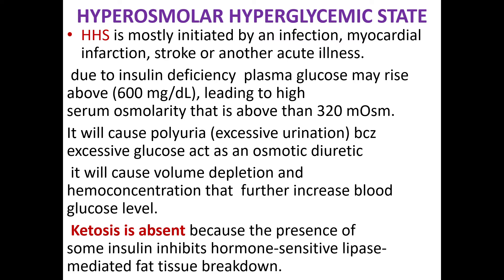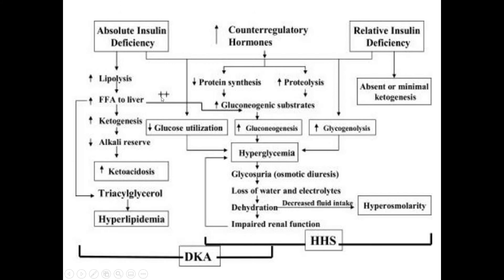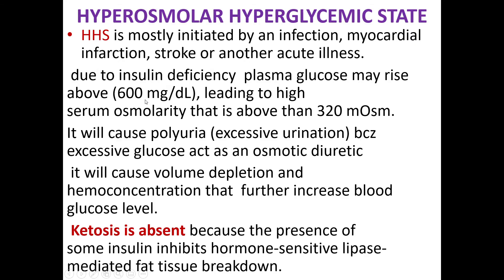Hyperosmolar hyperglycemic state (HHS) is another complication. The basic difference is that in DKA there is virtually no insulin, but in HHS there is a relative insulin presence — some amount of insulin. Whenever some insulin is present, ketones are not formed — that is the basic difference. HHS is mostly initiated by infection, myocardial infarction, stroke, or another acute illness. Due to insulin deficiency, plasma glucose may rise above 600 mg/dL, leading to high serum osmolarity above 320 mOsm/L.